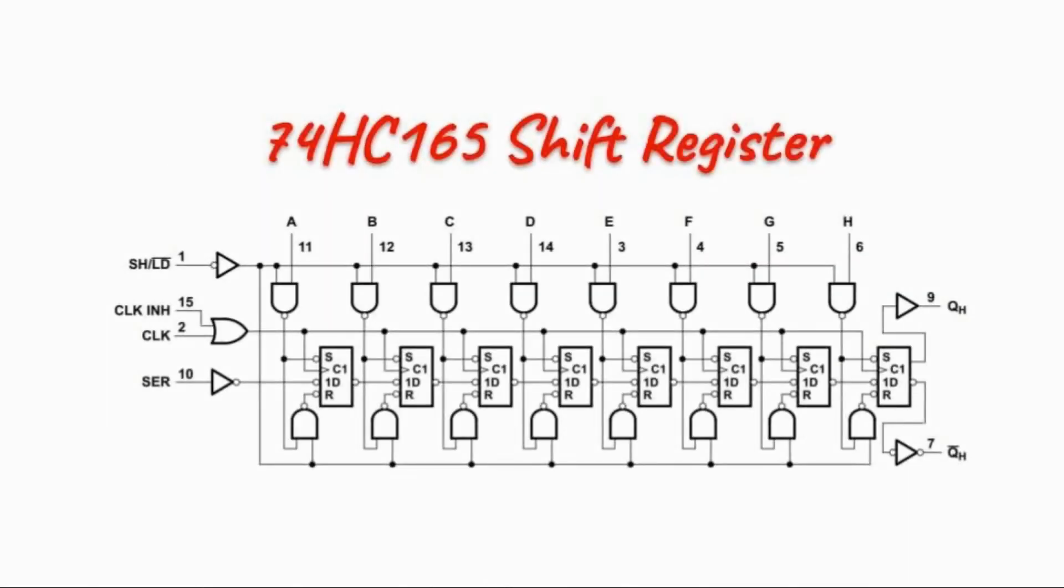A functional block diagram of the 74165 is shown here. The 8-bit input is loaded simultaneously into these 8 registers when the shift load is at logic 0. Once the byte is loaded into the 8 registers, the shift load pin is set to 1 to enable the clock and then the data is serially shifted out on the rising edge of the clock pulses.